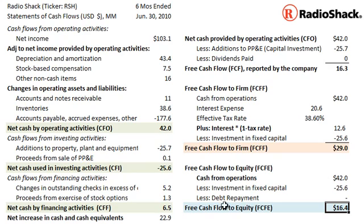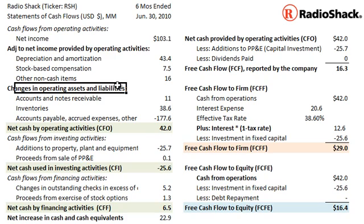So we have two different perspectives depending on the constituents we're interested in: cash flow to all suppliers of capital, and cash flow to just the residual common shareholders. This is David Harper of Monarch Turtle. Thanks for your time — see you next time.